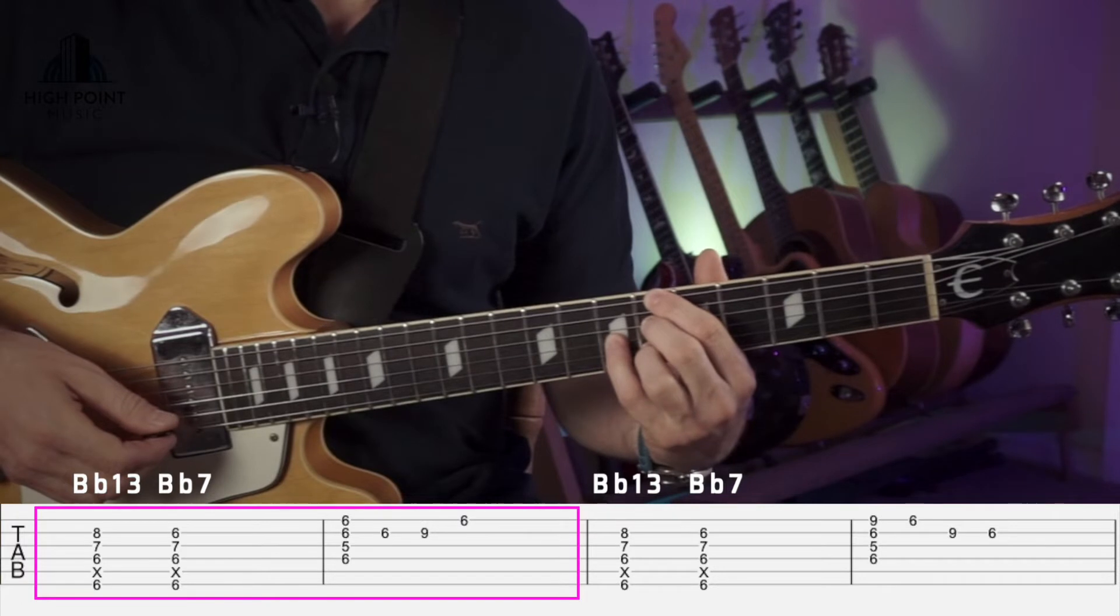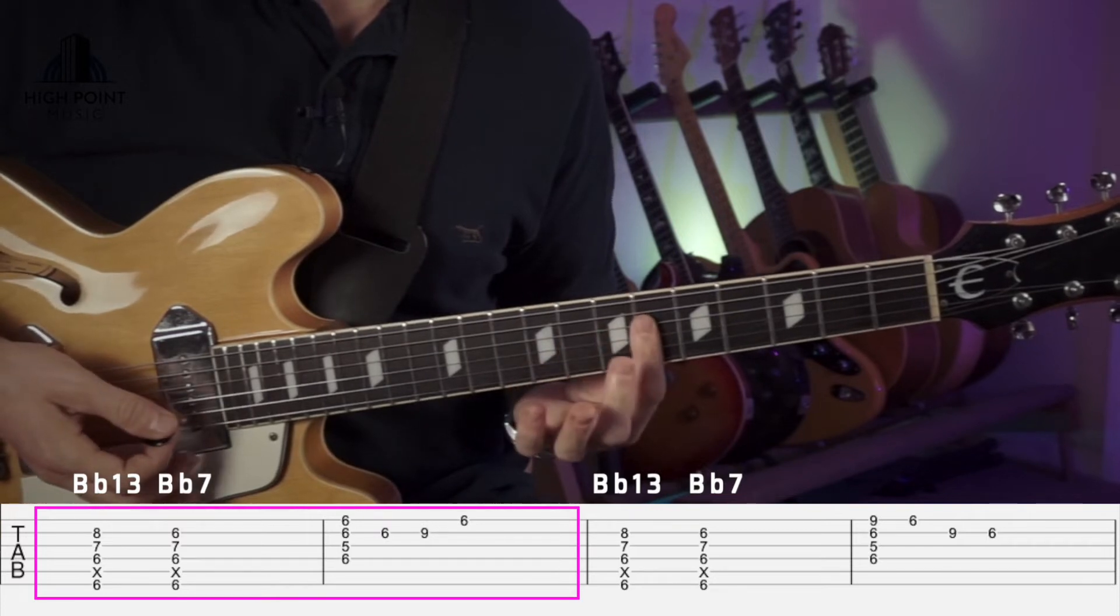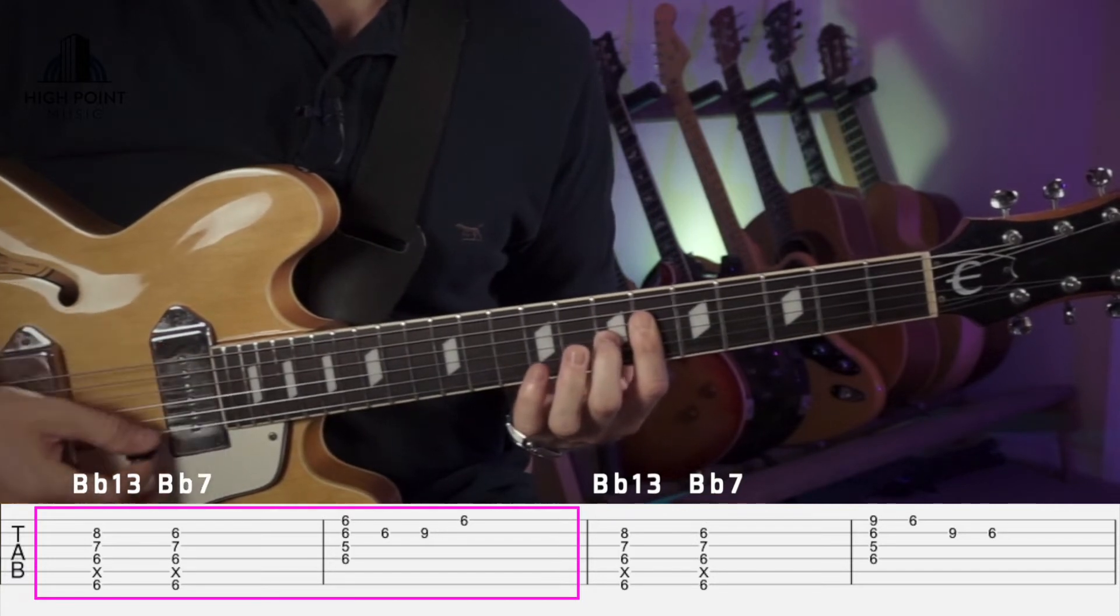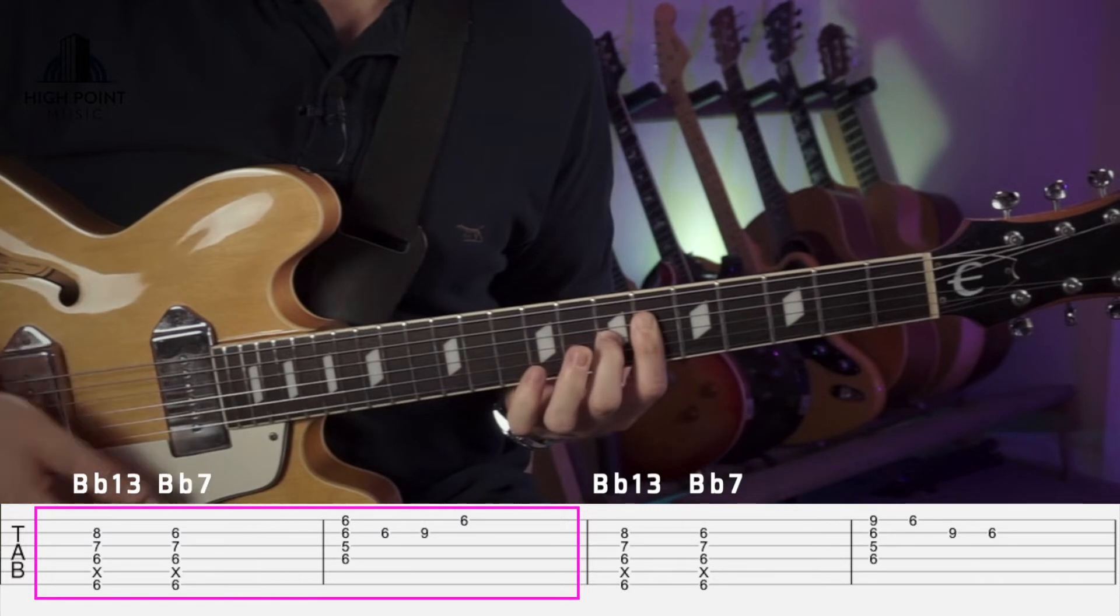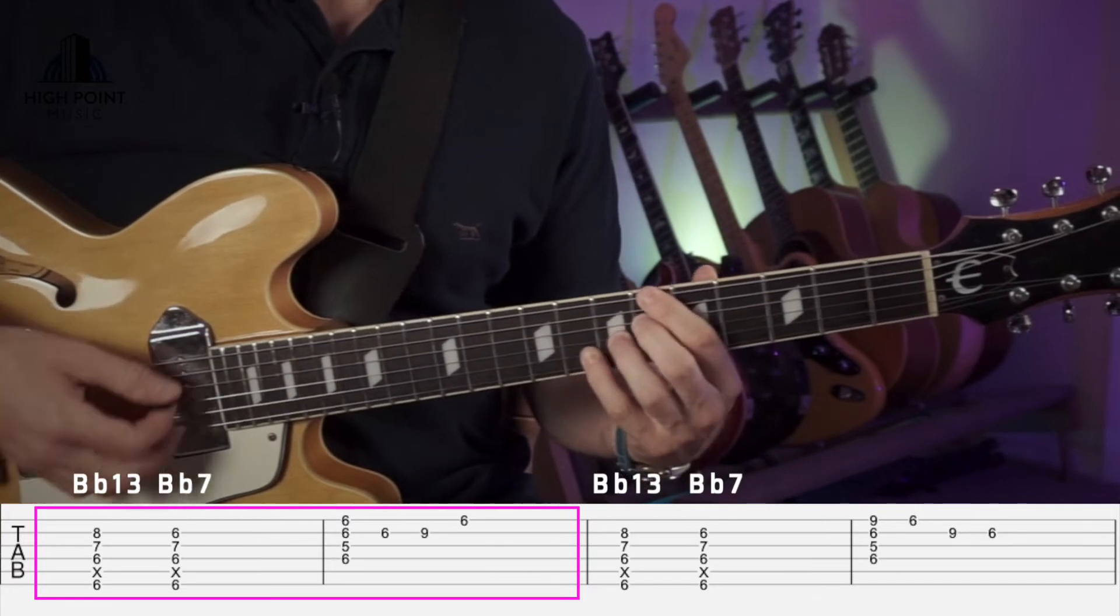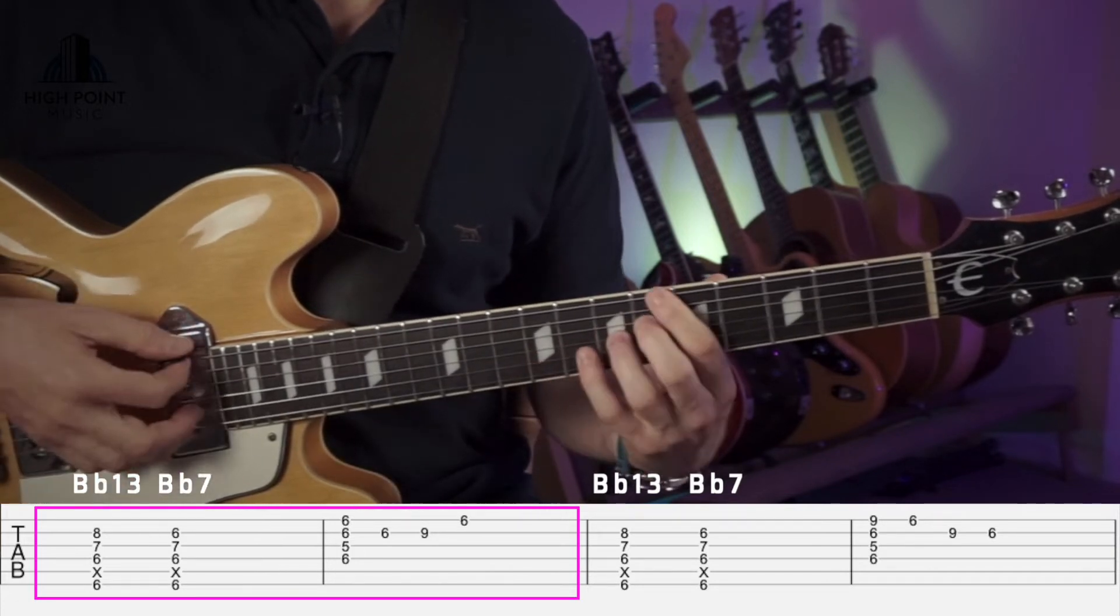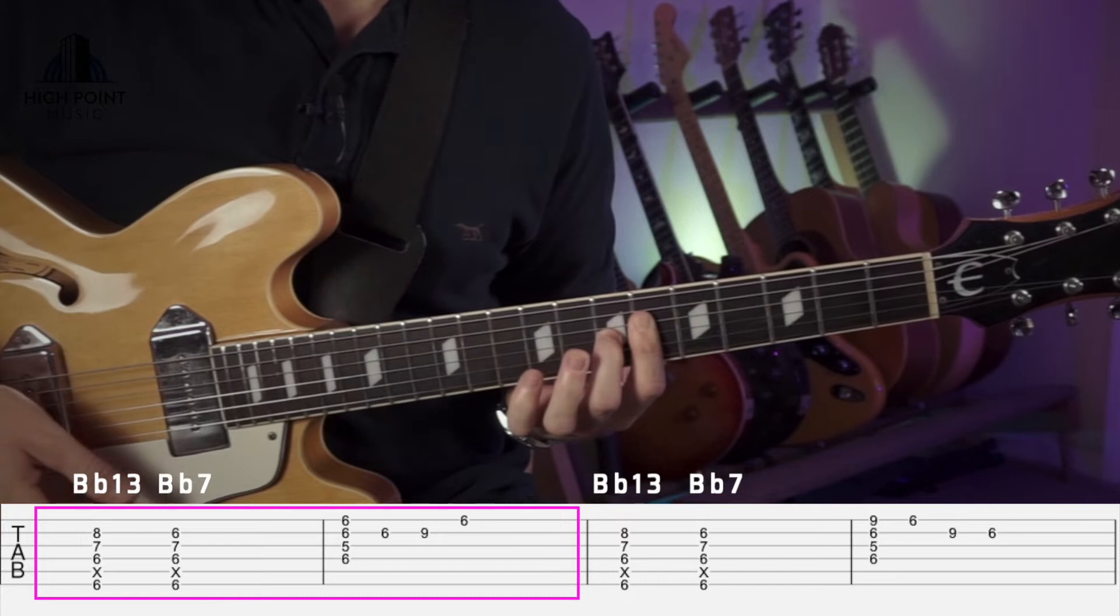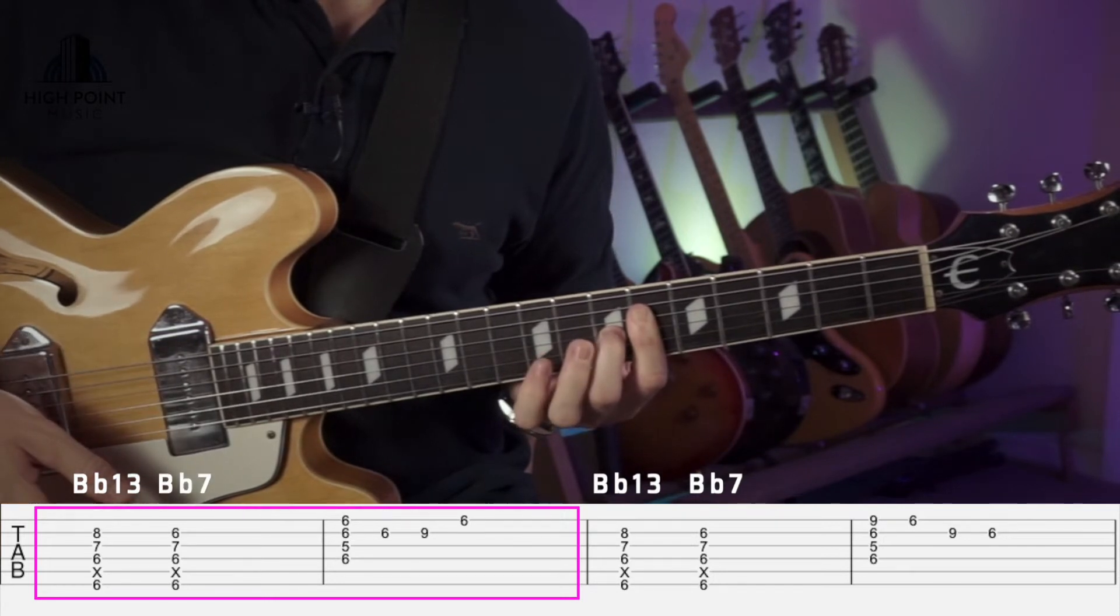Second part of this section, we're playing this Bb7 voicing here, which is our first finger laid flat on the 6th fret, second finger on the 7th fret here, and we're just strumming the bottom four strings, then we go B string, fourth finger on the 9th fret of the B string, and then 6th fret on the E string like that. So we've got Bb13 to Bb7, drop down to this voicing here. So just do that a few times.